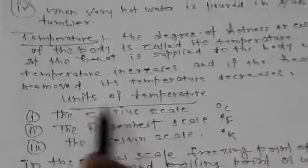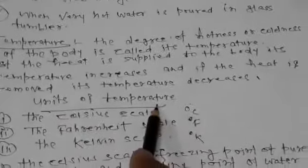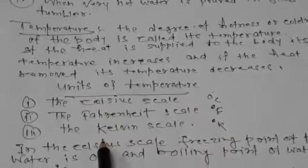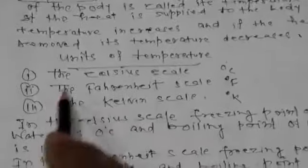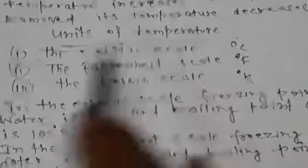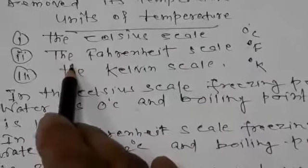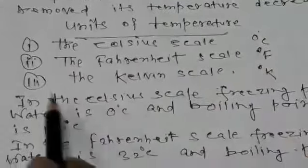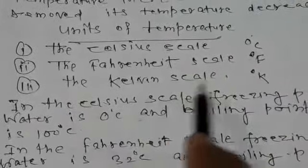The next part is the units of temperature. There are three units of temperature: first is the Celsius scale, second is the Fahrenheit scale, and third is the Kelvin scale.